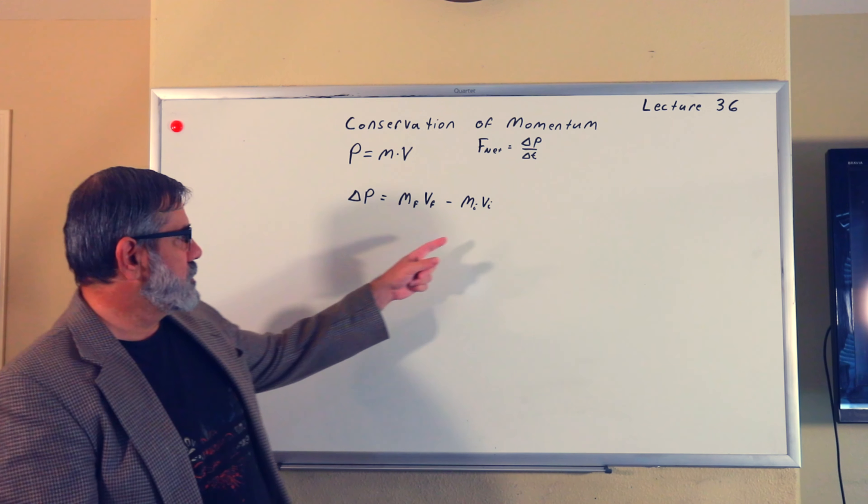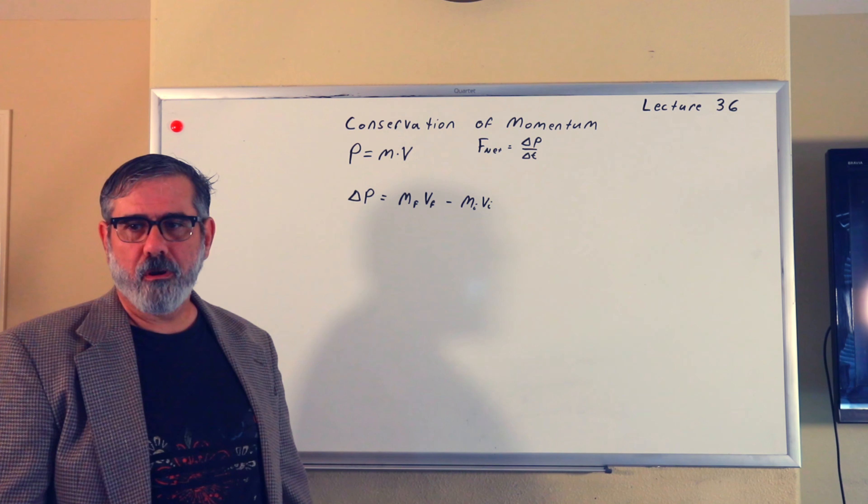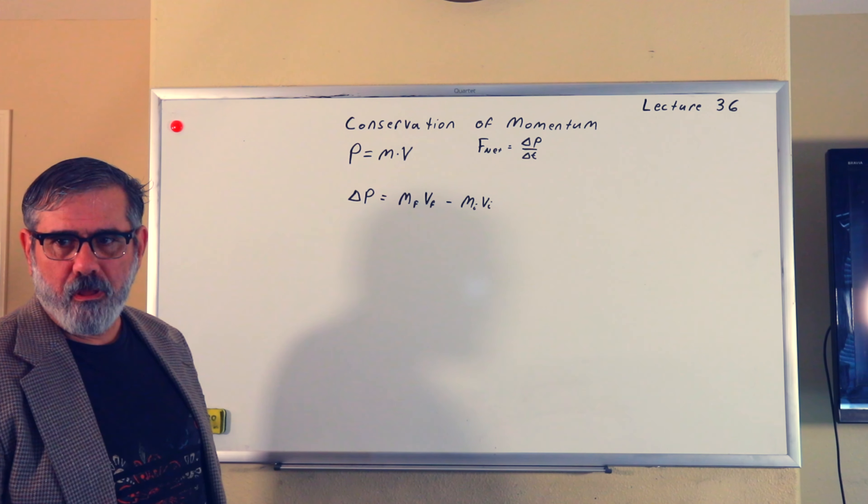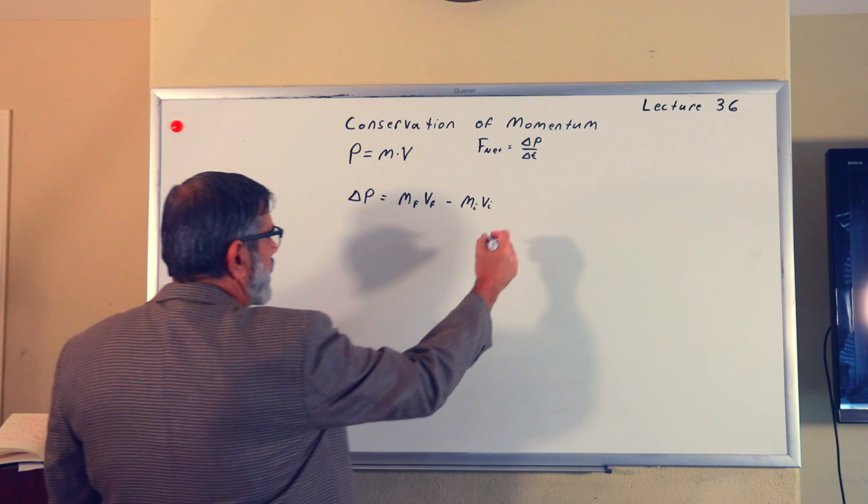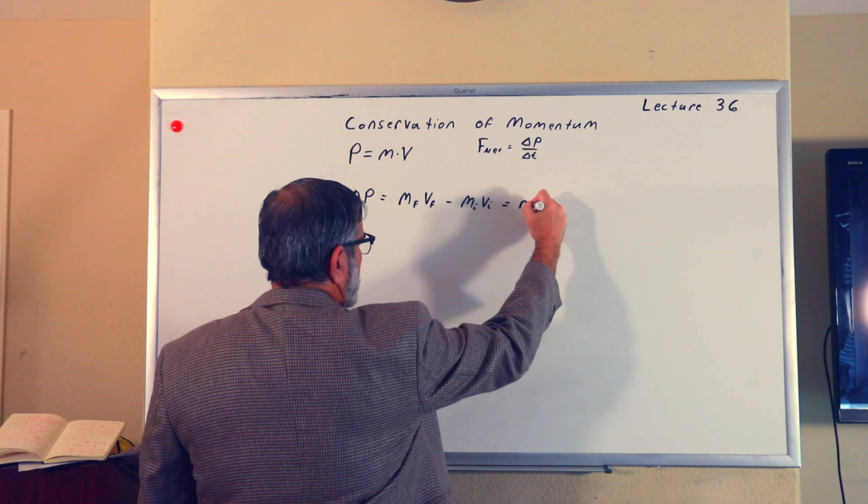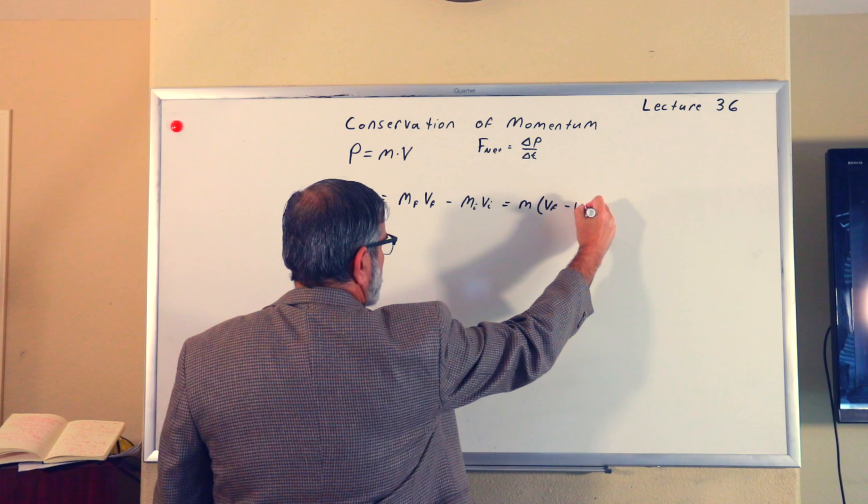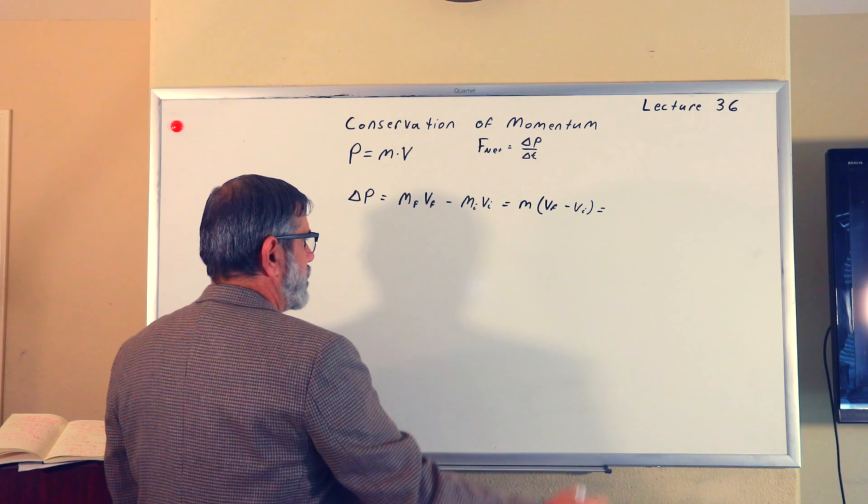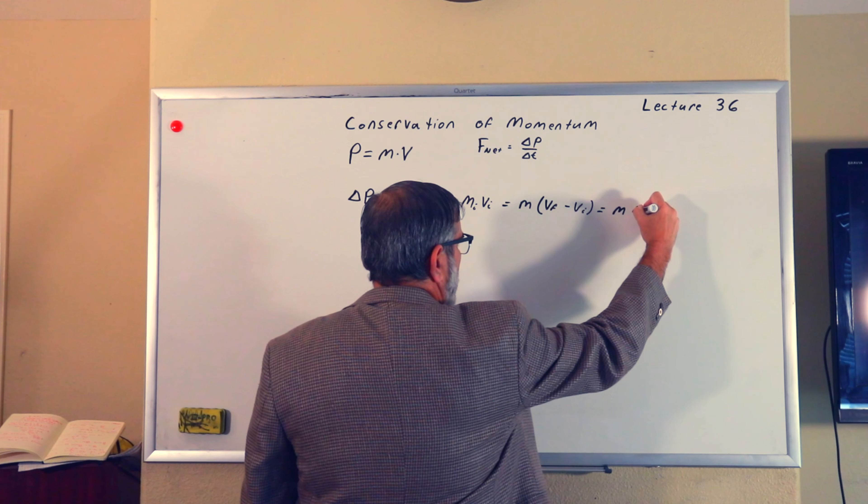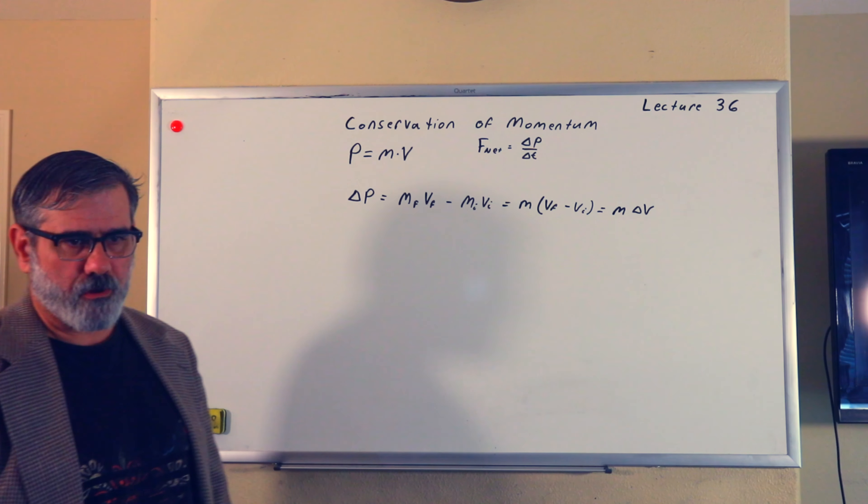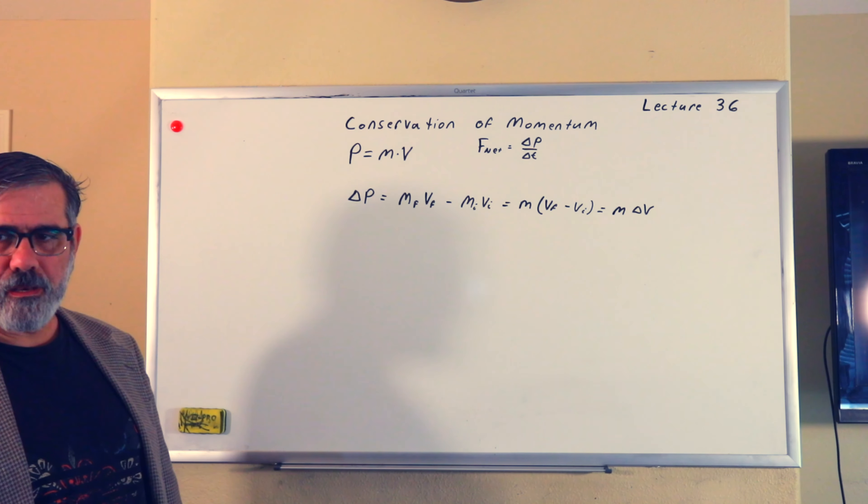Let's assume that the mass is the same before and after. So the delta M, if you will, is zero. If that's the case, if this is just equal to M times V_f minus V_i, then delta P can be written as M times delta V. If the mass was not the same before and after, what might that correspond to?